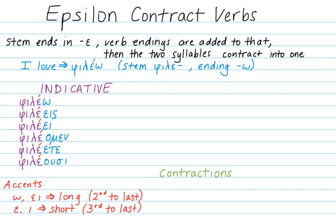Now we apply our contractions. When you have an epsilon plus an omega, you get an omega. If you have an epsilon plus an omicron upsilon, you get omicron upsilon, which is pronounced 'oo.' If you have an epsilon plus an omicron, you also get 'oo.' In these three cases we have an epsilon plus an o sound, and the epsilon sound disappears completely.